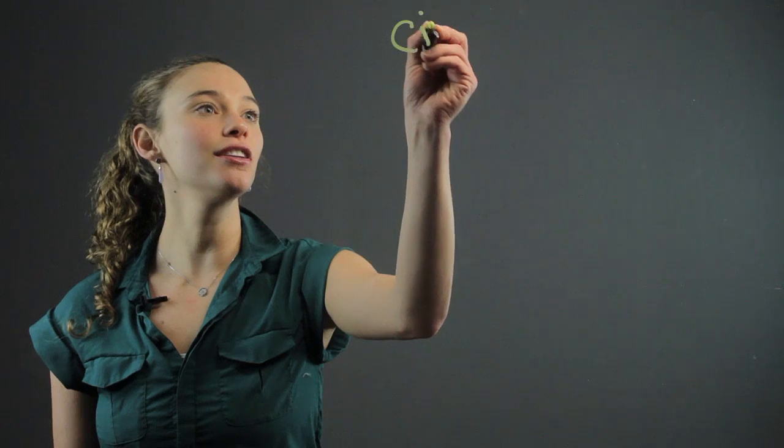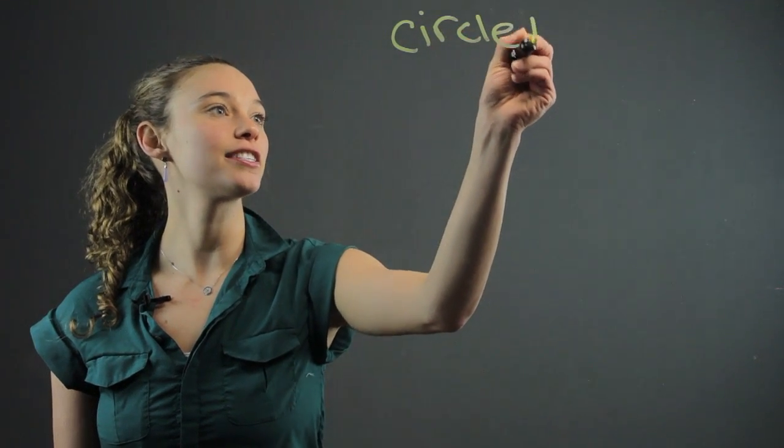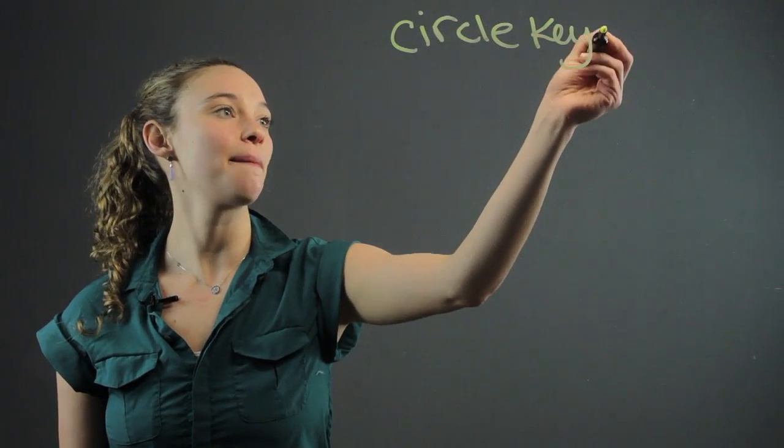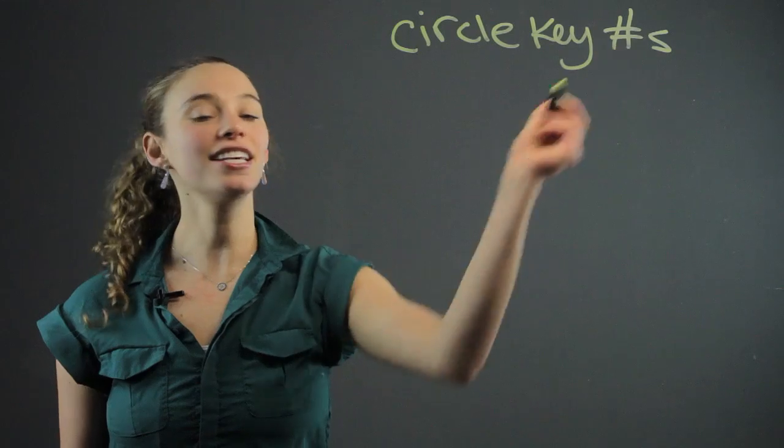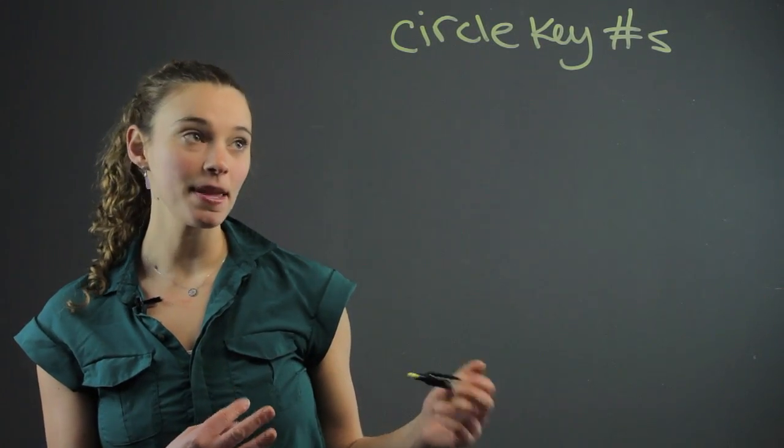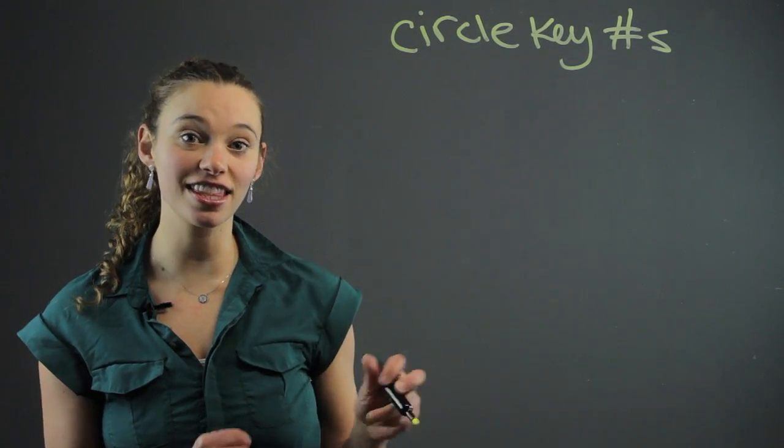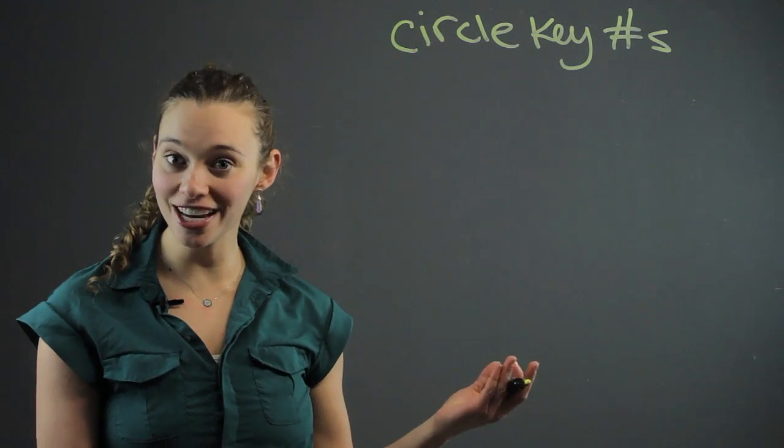There are a few different key things I like to teach my students. One is to circle the key words or key numbers. As they're reading the word problem, have them circle the information that's relevant that they're going to use in the equation.